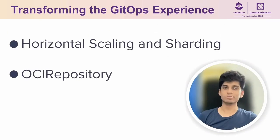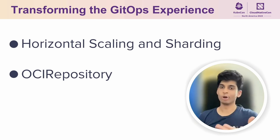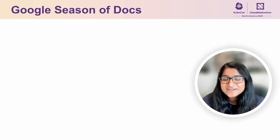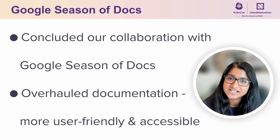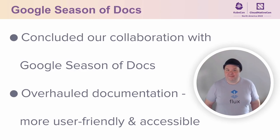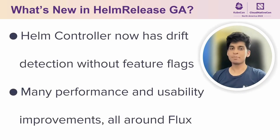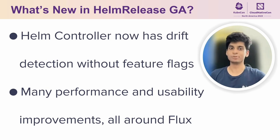Flux is now horizontally scalable through sharding. We are continuing to work on OCI repository and make it a solid alternative to Git repository, so you can reuse features like OIDC keyless flows and secure provenance for release. Another exciting update is the conclusion of our partnership with Google Season of Docs. Thanks to this collaboration, our documentation has undergone a massive overhaul — the docs are now more user-friendly and accessible than ever. With Helm Controller at GA, we have drift detection support and many great performance improvements. See up to 50% performance improvements in CPU and memory consumption.